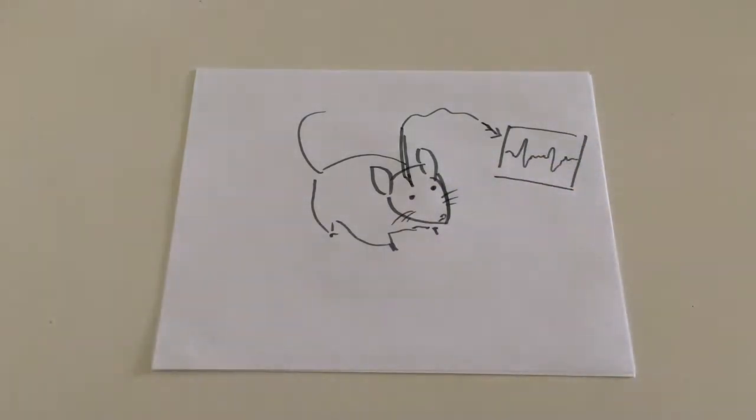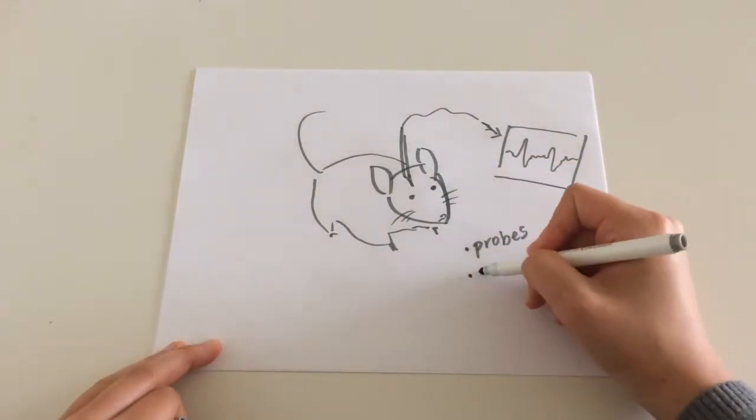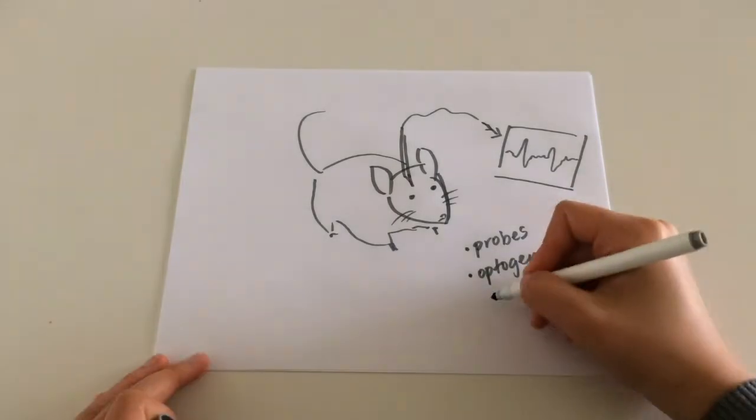Scientists also delete gene sequences to create knockout mice, in order to observe the effects of inactive brain areas.